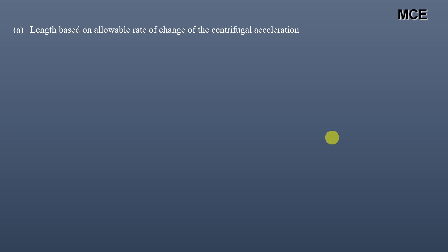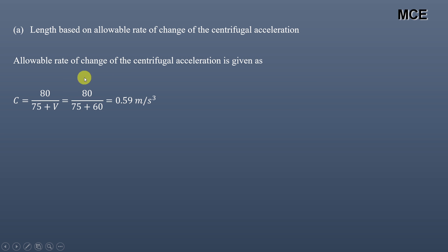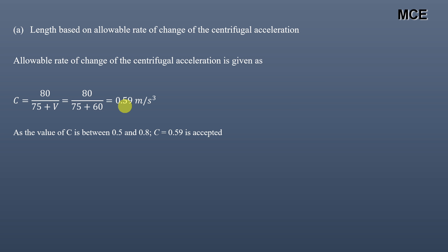First, we find the length based on the allowable rate of change of centrifugal acceleration. The allowable rate C is given as C = 80 / (75 + V), where V is the design speed in km/h. Putting V = 60, we get C = 80 / (75 + 60) = 0.59 m/s³. The limit for C is between 0.5 and 0.8, and since our value falls within this range, it is accepted. We take C = 0.59.